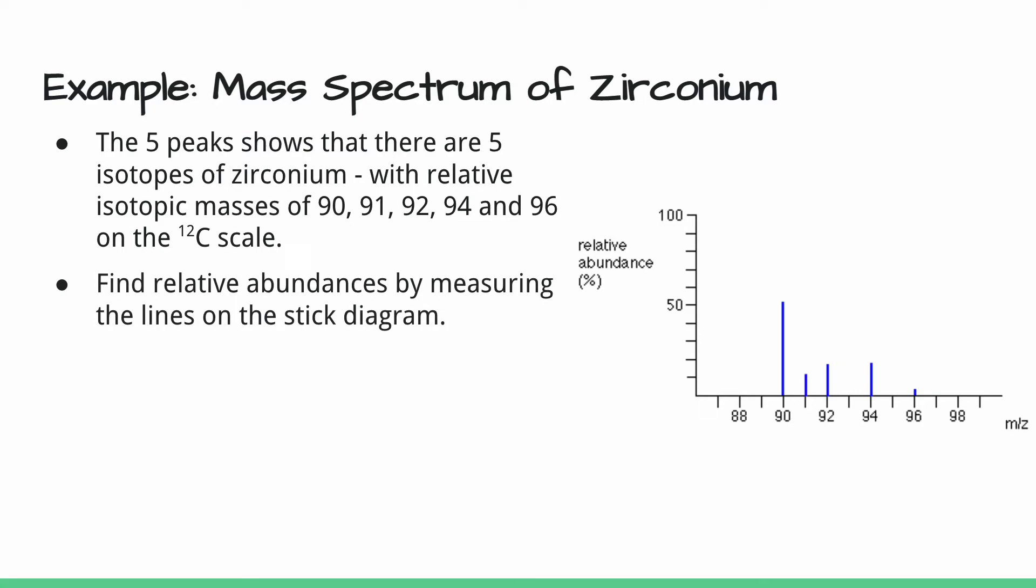If we wanted to figure out the relative atomic mass of zirconium, what we'd do is take a ruler and measure against our graph to figure out the relative abundances of each of our isotopes. You can see the one at 90 is a little bit over 50, and the other ones are much smaller, but we would want to measure each one.